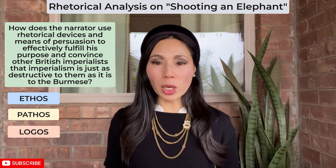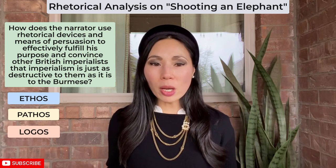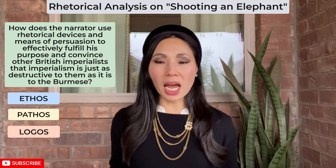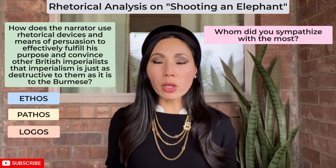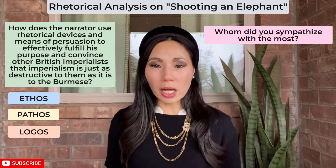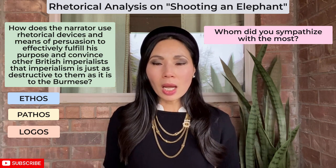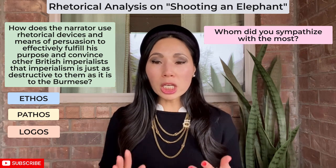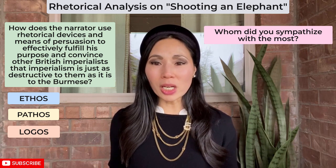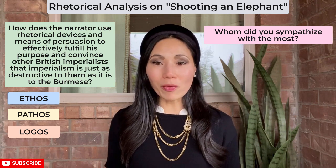Perhaps the most compelling means of persuasion that the narrator employs in Shooting an Elephant is pathos. Even though you are not the target audience, think about the variety of emotions that you felt while reading this essay. When I teach this in my classes, I ask my students whom they sympathize with the most: the narrator, the Burmese, or the elephant. Overwhelmingly, my students say they sympathize with the elephant, then feel a little more sympathy for the narrator, and then very little for the Burmese. And this is how the narrator wants us to feel. His target audience is fellow British imperialists — an attempt to make them feel pity for the Burmese is not the most effective means to argue the evils of imperialism. They need to identify with the narrator and the elephant, which actually metaphorically stands for the British Empire.